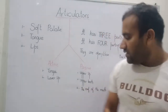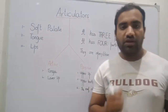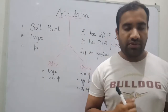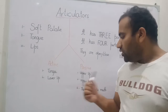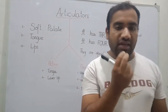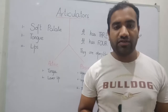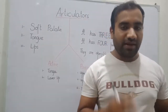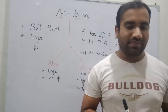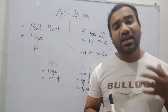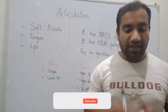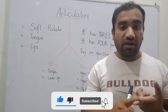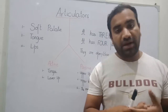The passive articulators include: the upper lips — your upper lips are a passive articulator; second, your upper teeth — your upper teeth are a passive articulator; and here is the roof of the mouth, called the palatal, which is also a passive articulator. It has three parts: the front of the palatal, the middle, and the back.